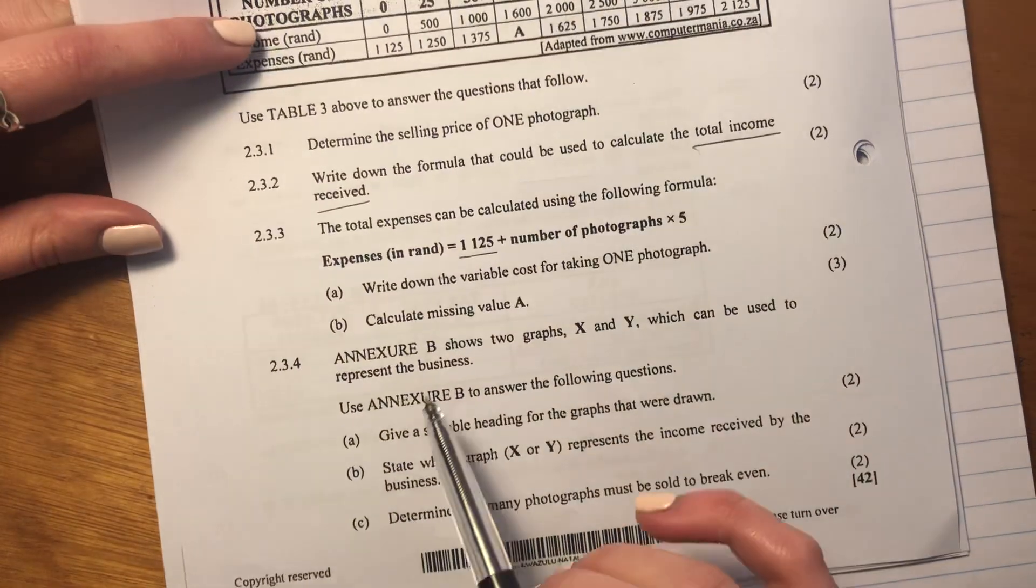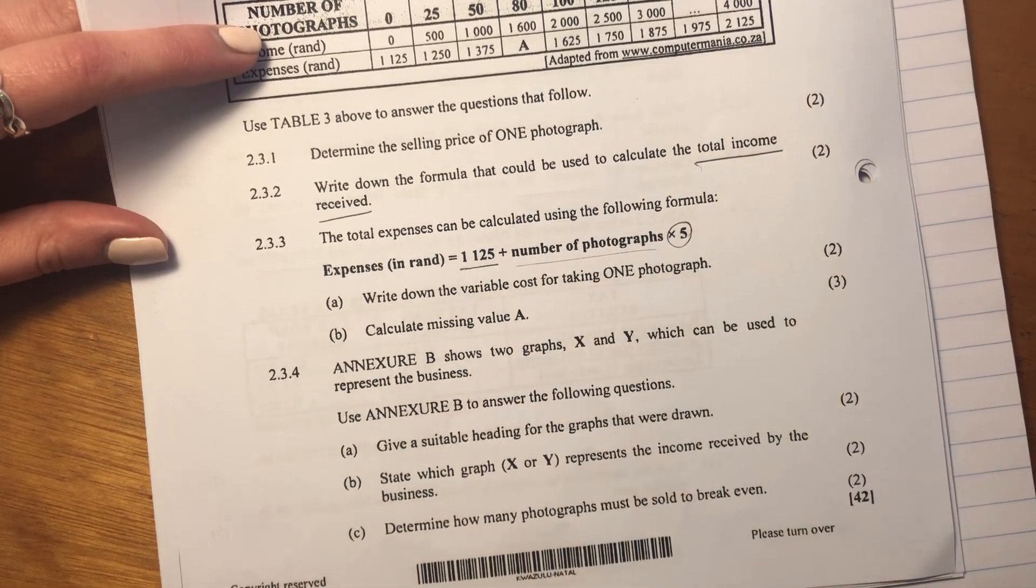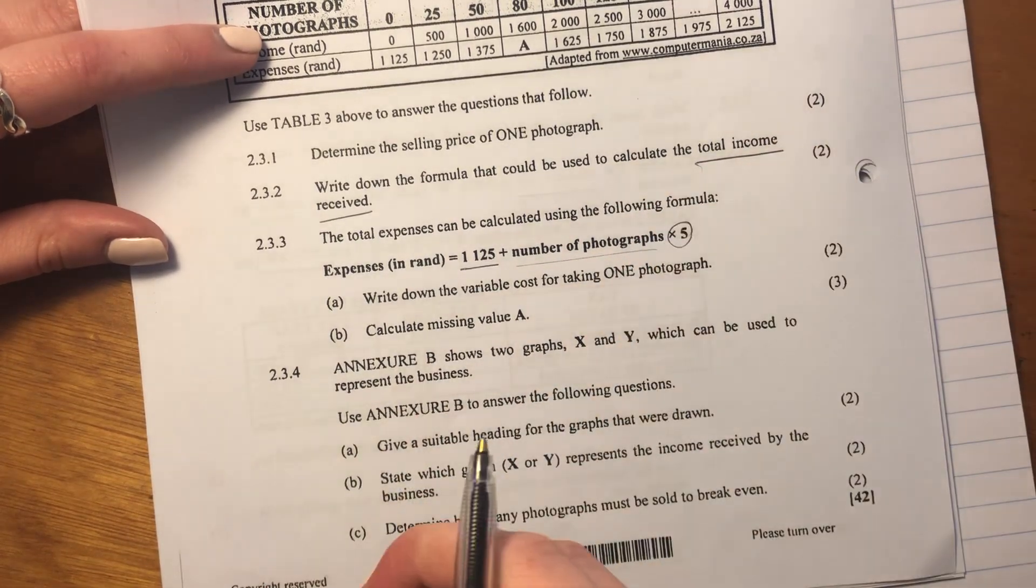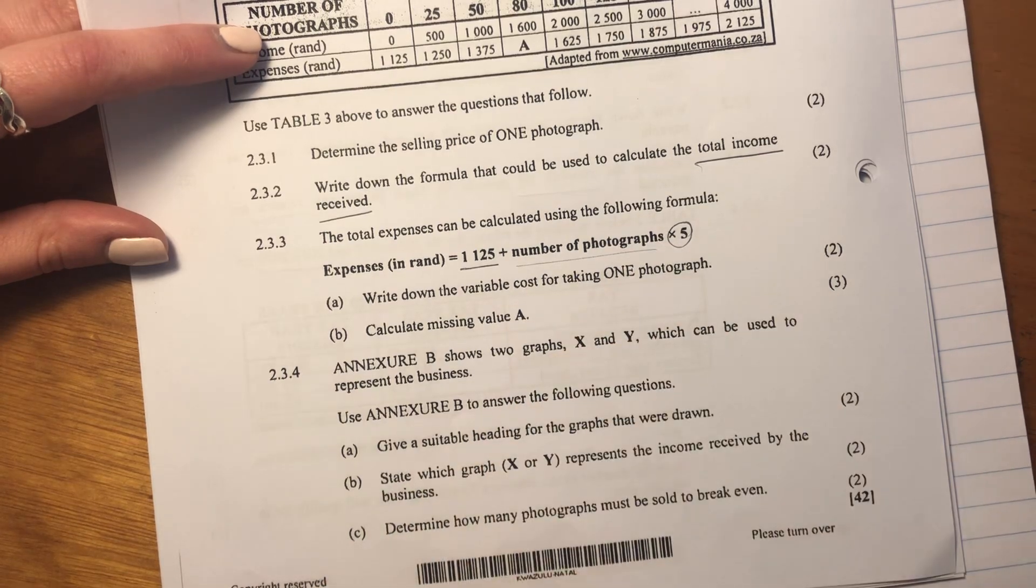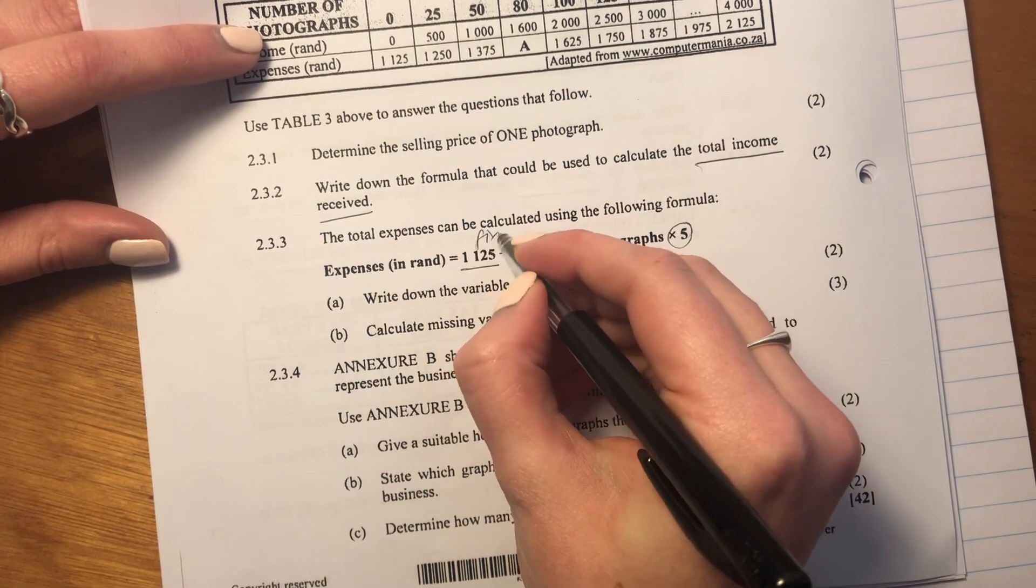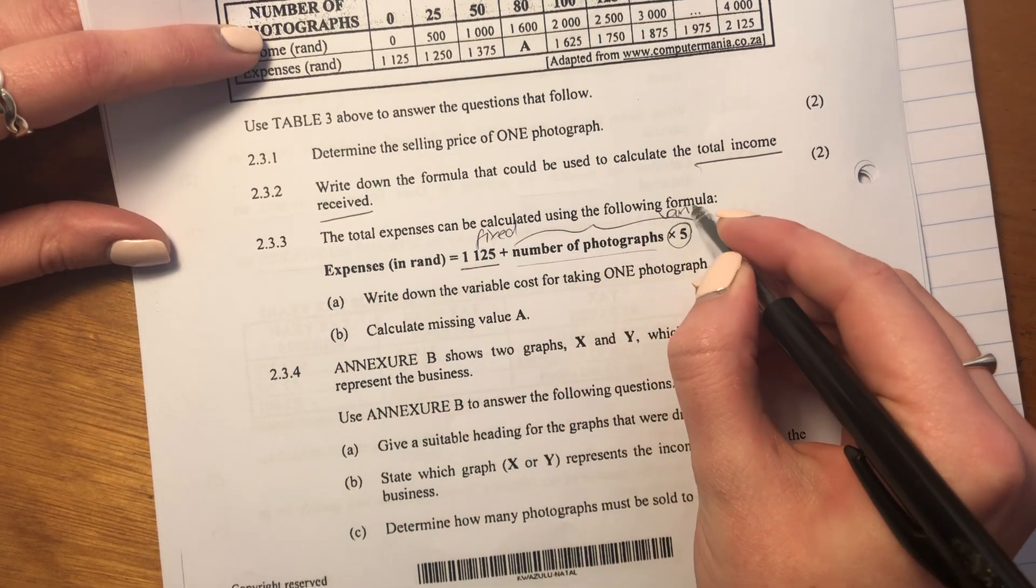Then she also has an additional cost of 5 rand times by the number of photographs. So that's what we call a variable cost, because it varies by the number of photographs taken or printed. So this is what we call fixed. This here is what we call variable.